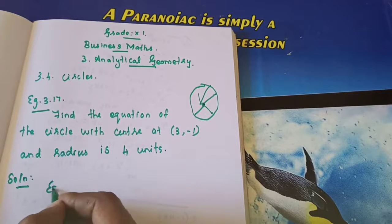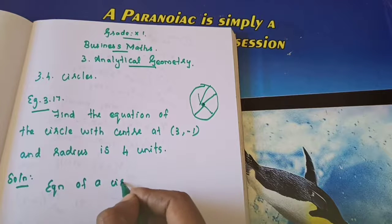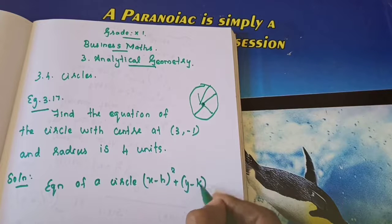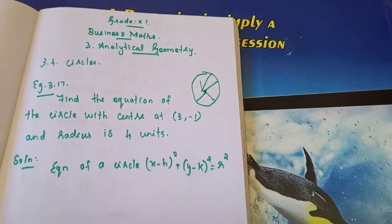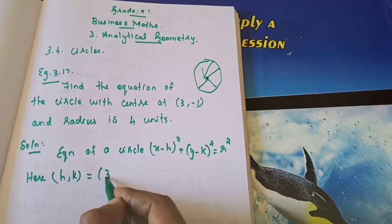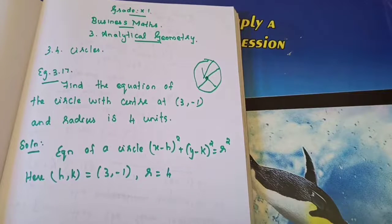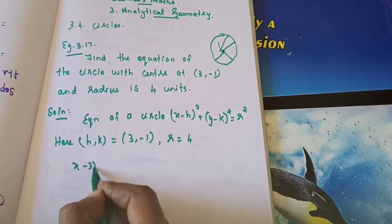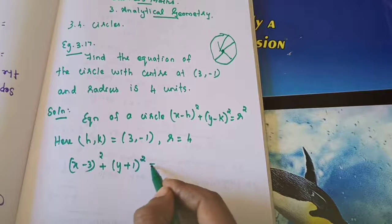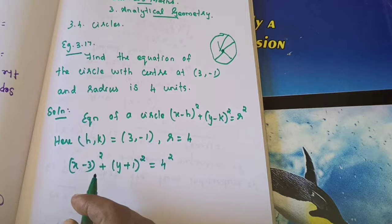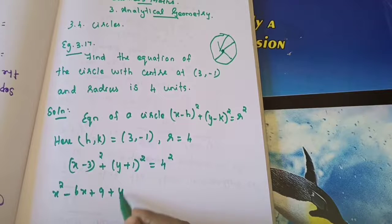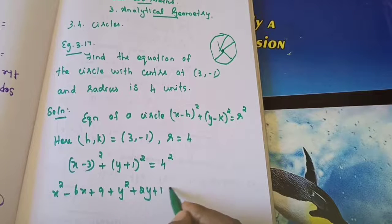Solution. Equation of a circle: x minus h whole square plus y minus k whole square equals R square. Here H comma K equals 3 comma minus 1, and R equals 4. Substituting: x minus 3 whole square plus y minus of minus 1 whole square equals 4 square. Expanding using the A minus B whole square formula: x square minus 6x plus 9 plus y square plus 2y plus 1 equals 16.